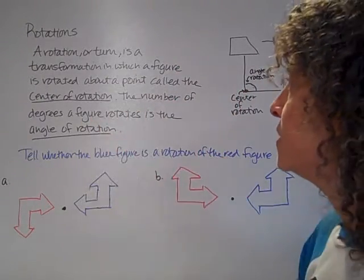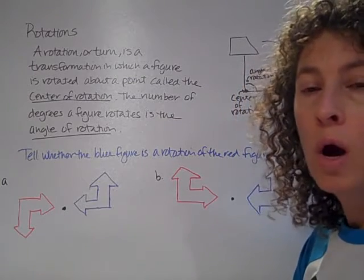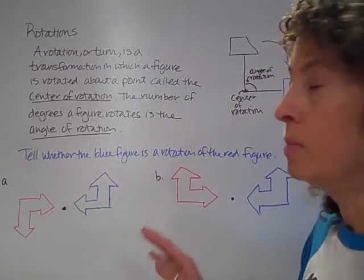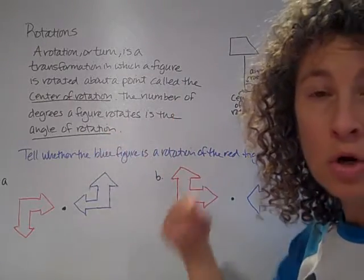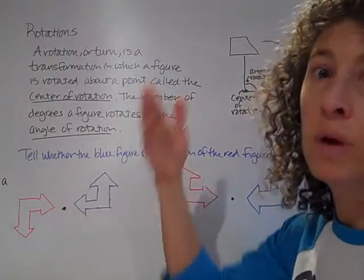The number of degrees a figure rotates is the angle of rotation. And we also want to talk about which direction a figure will rotate also. So as far as angle of rotation, we're going to talk about it as in a circle. So the most it can rotate is 360 degrees and it'll be right back to where it started.